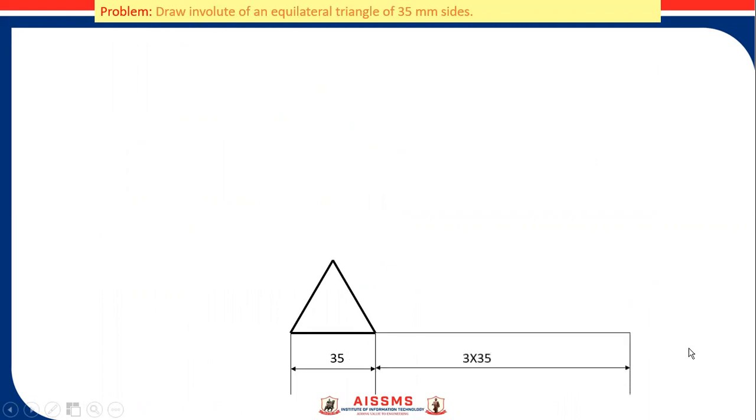Then draw a horizontal line which is 3 times 35. That is one side, two sides, and three sides. That is 3 times 35. Triangle having three sides, so we have to multiply by here 3 times 35. Then extend this side.